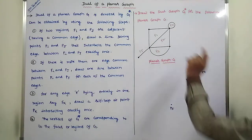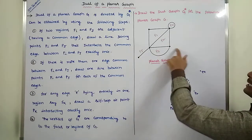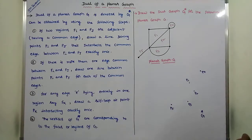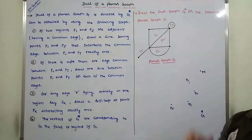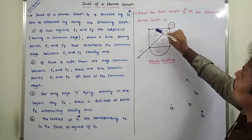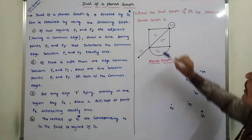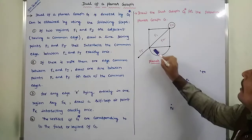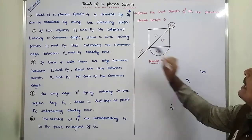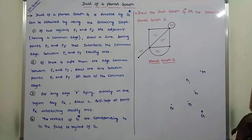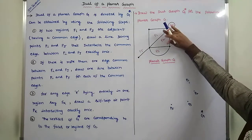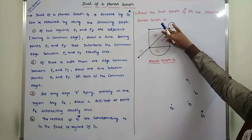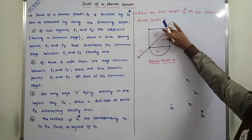This is the given planar graph. For that graph, we have to draw the dual of planar graph G*. The first point is: how many regions are there in the given planar graph? This is the first region, this is the second region, this is the third region, this is the fourth region, and the outer region is the fifth region. So, five regions or faces are there in the given planar graph G.